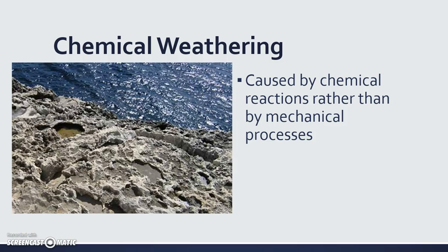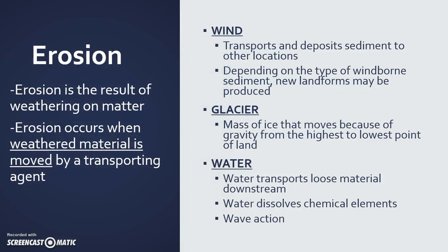In chemical weathering, this is caused by a chemical reaction that the rock has had with some sort of chemical in the earth — for example, salt that wears down the rocks near the ocean. After a rock has been weathered, erosion can take place. Erosion is the result of weathering on matter — when the material that has broken apart is moved by some transporting agent. The material can be moved by wind, which sometimes transports sediment to other locations and deposits it there. Depending on the type of wind-borne sediment, new landforms can be produced when the sediment is moved with the wind.